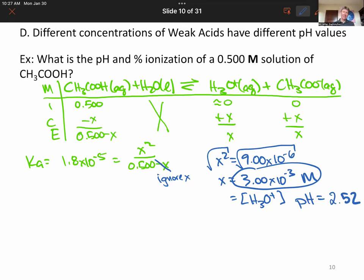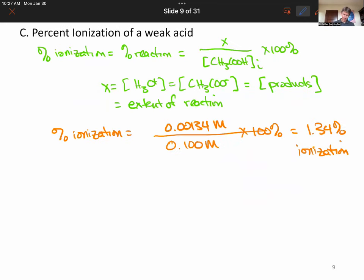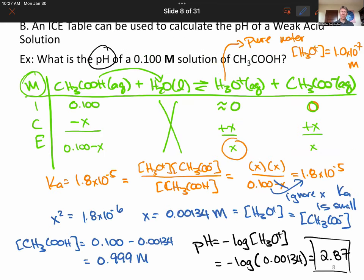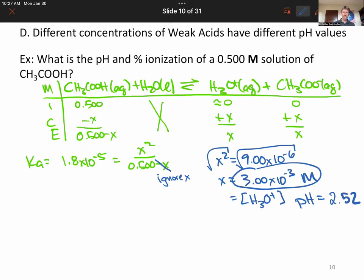And our pH is going down. That makes sense. It went down from our previous one, where it was 2.87. If you increase the concentration of your acid, pH decreases. More acid, higher concentration, lower pH.